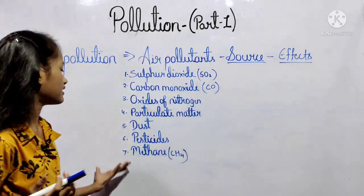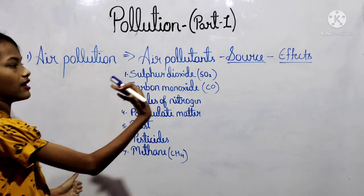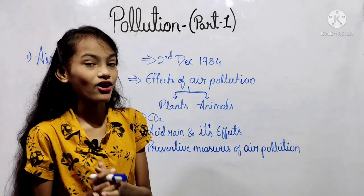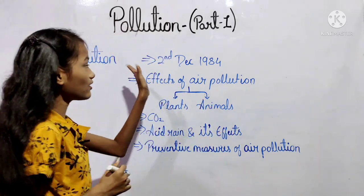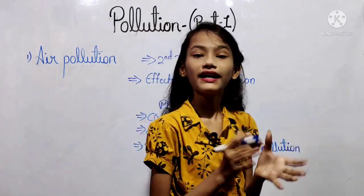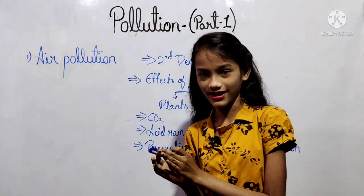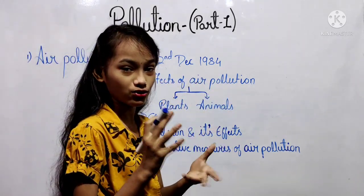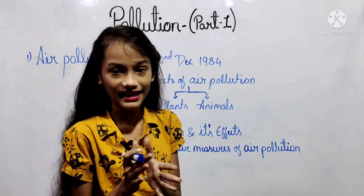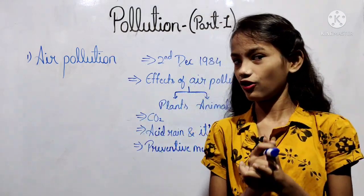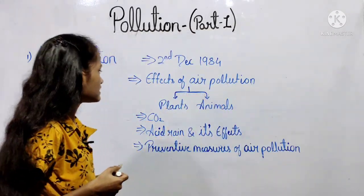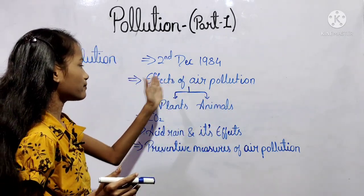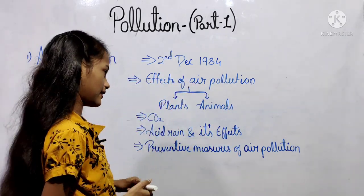These are our seven air pollutants with their sources and effects. The worst ever industrial accident occurred in Bhopal on the night of 2nd December 1984, and about eight thousand people died due to the accidental gas leakage.